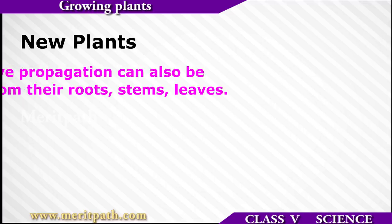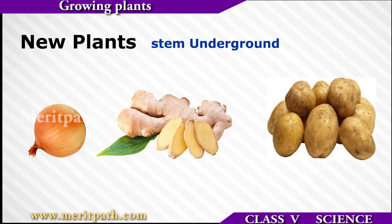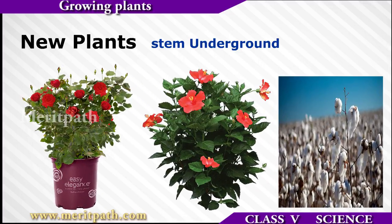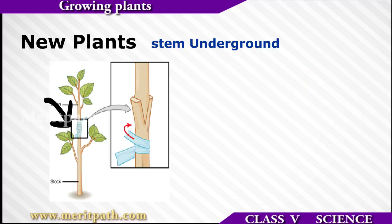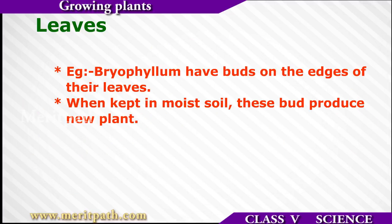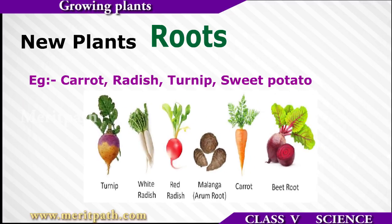Seeds also grow from the roots, stem, leaves and spores. Some plants like ferns don't produce seeds; they make tiny round spores which eventually turn into a new plant. When the stem of a plant is cut and planted in soil, a new plant is grown — examples are onion, ginger and potato. Leaves of some plants like bryophyllum have buds on the edges of the leaves, and when kept in moist soil, these buds produce a new plant. Some plants like carrot and radish are grown from the roots.